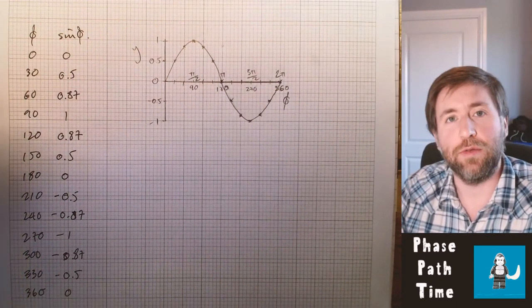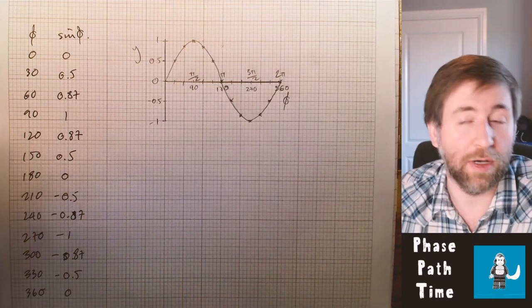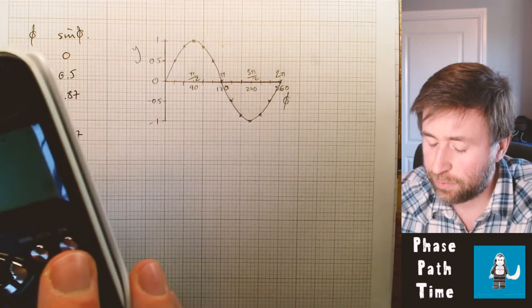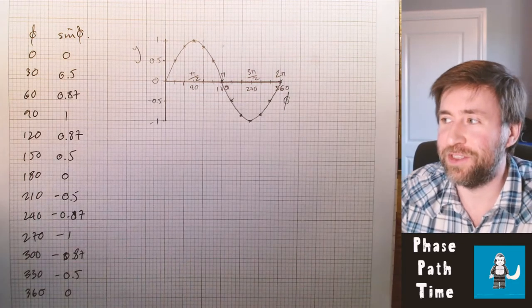We can express phase angle in either degrees or in radians. You just need to make sure that you have your calculator set up in the correct one whenever you're using it. I always like to pop mine back to degrees because I do a lot of GCSE teaching.